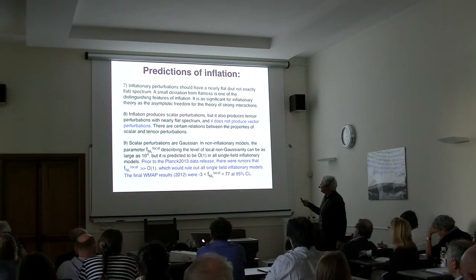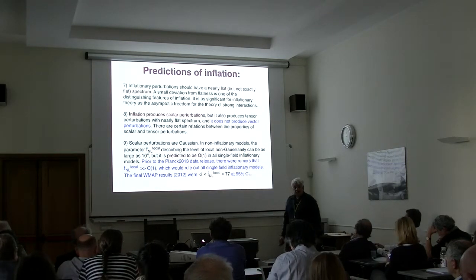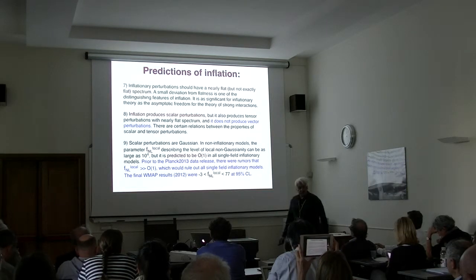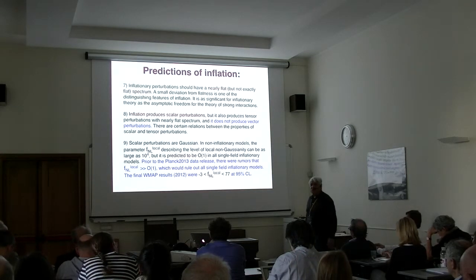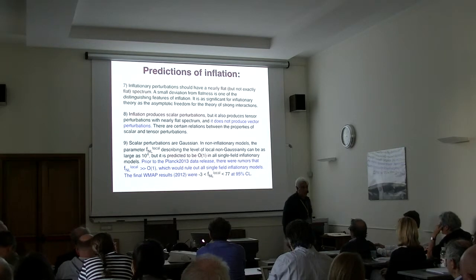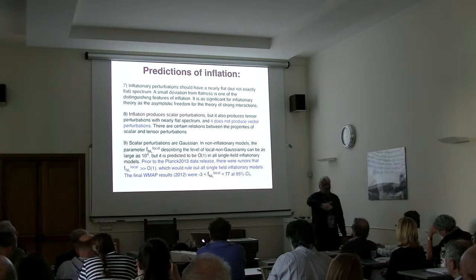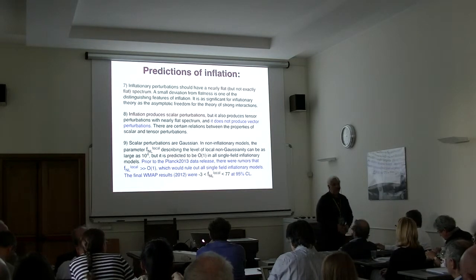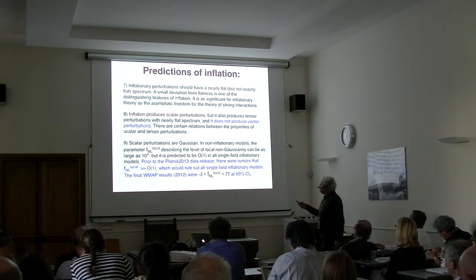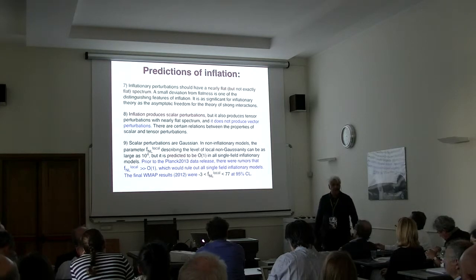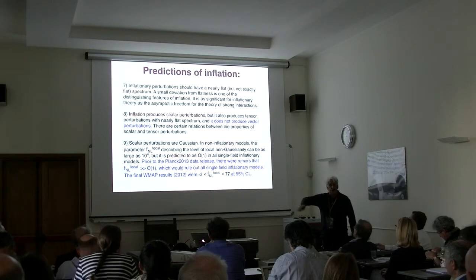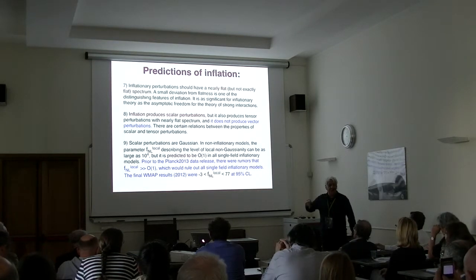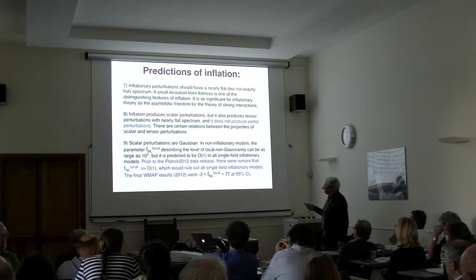The spectrum of perturbations produced by inflation should be nearly flat — and that is what we observe. But there is a subtlety: in inflationary theories, the spectrum is almost never exactly flat. It is extremely difficult to construct a potential giving exactly flat spectrum. In all other cases, theories of inflation predict the spectral index ns less than 1 — and that is what observations have shown.